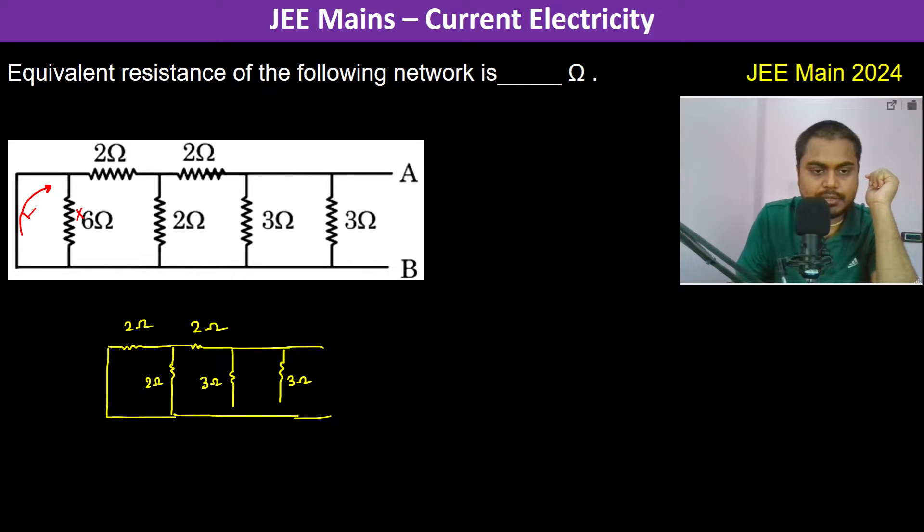Okay, this is A and this is B. So what we have done is we have strained down the 6 ohm resistance. Now these two are in parallel, so therefore this is 1 ohm.